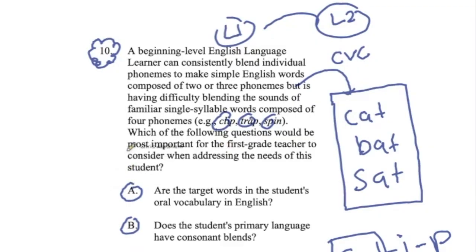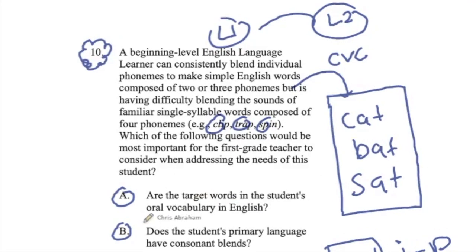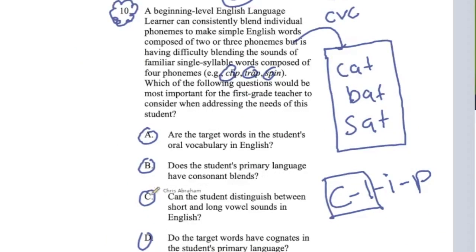So now let's go back to the question. It says, which of the following questions would be most important for the first grade teacher to consider when addressing the needs of the student? A, are the target words in the student's oral vocabulary in English? B, does the student's primary language have consonant blends? C, can the student distinguish between short and long vowel sounds in English? D, do the target words have cognates in the student's primary language? There's a lot going on here.